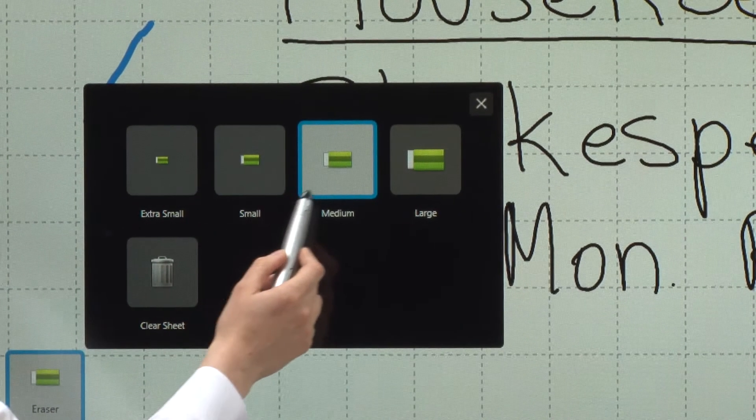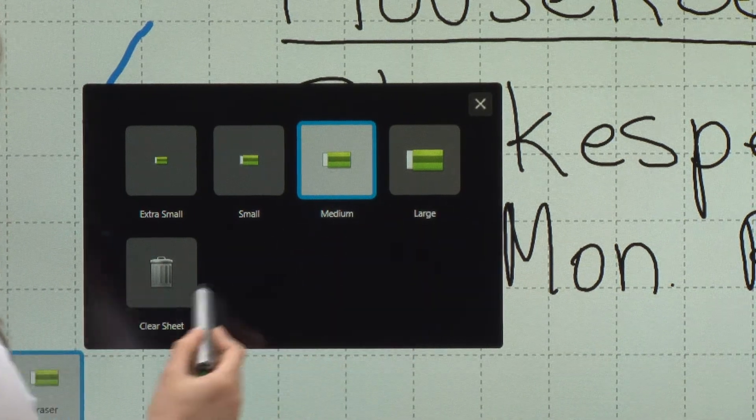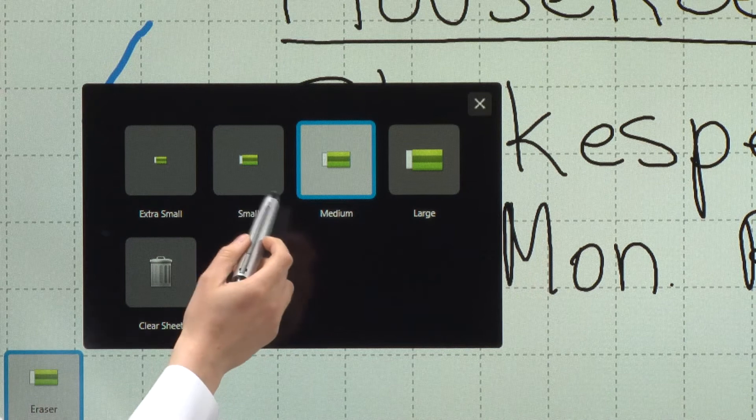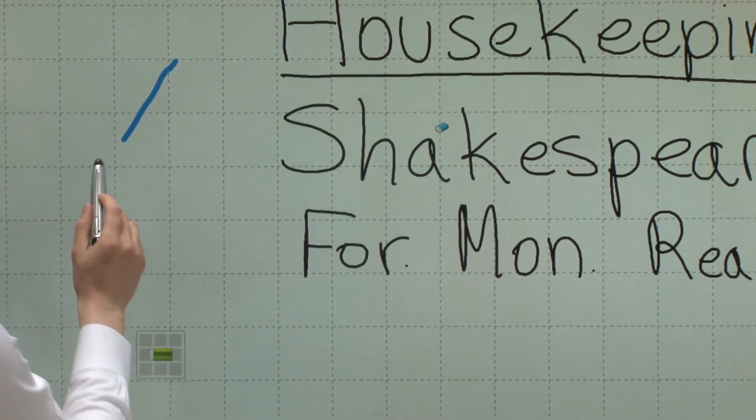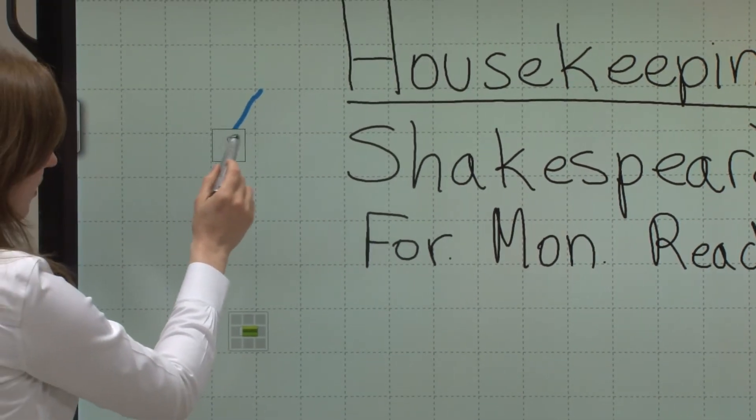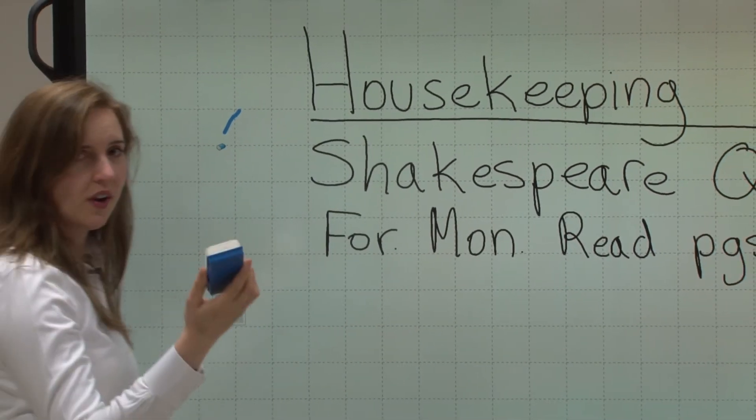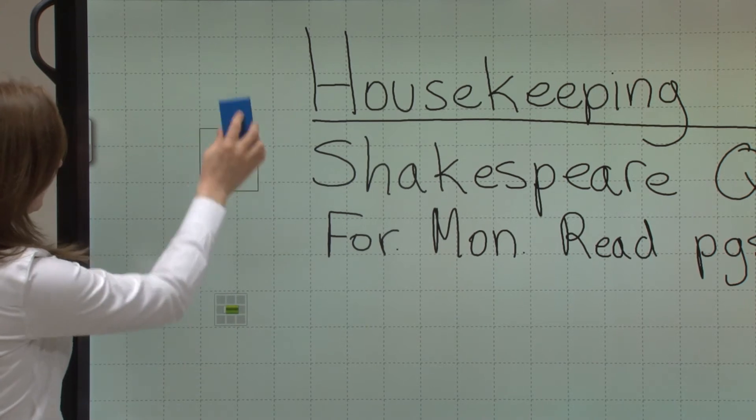The eraser function has different sizes of erasers. You have extra small, small, medium, large, or you can choose to clear your entire sheet. So I can choose medium and I can slowly start erasing this part of the screen. I have an eraser that comes with the Aquos board which erases easily.